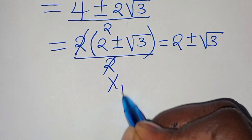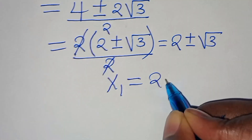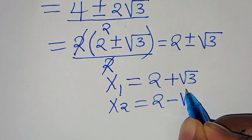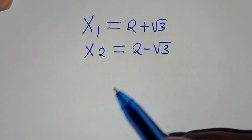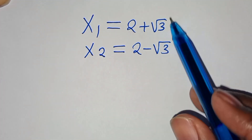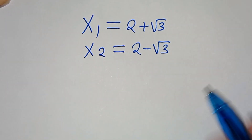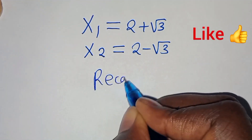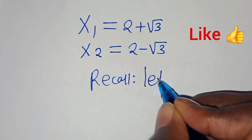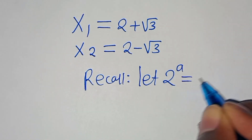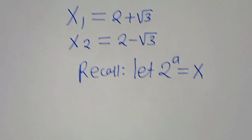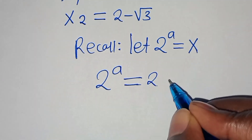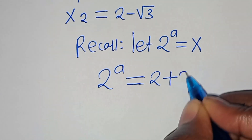This denotes that x1 is equal to 2 plus square root of 3, and x2 is equal to 2 minus square root of 3. Since we have these values, we can proceed to solve for the values of A. Recall we assumed that 2 to the power of A is equal to x. So this means that 2 to the power of A is equal to 2 plus square root of 3.